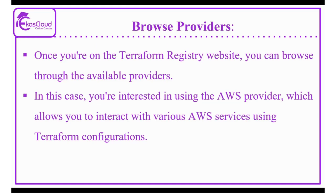Using the AWS provider with Terraform allows you to define infrastructure resources such as EC2 instances, S3 buckets, IAM roles, and more using Terraform configuration files. This approach provides a convenient and consistent way to manage your AWS infrastructure as code, enabling versioning, collaboration, and automation of infrastructure deployments.